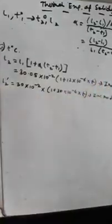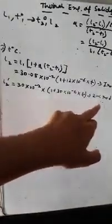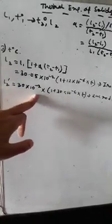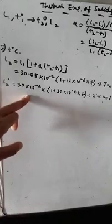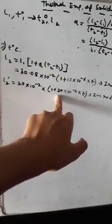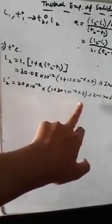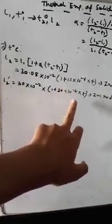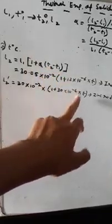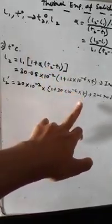Now we have to proceed with the calculation of the zinc rod. Same way, this is your 30 into 10 to the power minus 2 - it's your L1, that is the initial length of your zinc rod. This into 1 plus alpha, that is the coefficient of linear expansion of zinc. T into again T - as I told you, the increase in temperature will be T2 is your T, T1 is your zero, so T minus 0 is T.